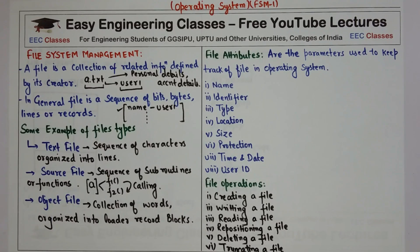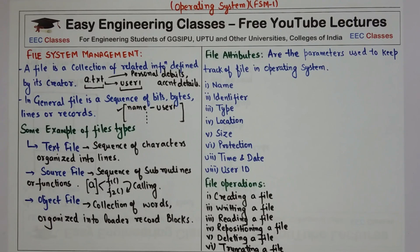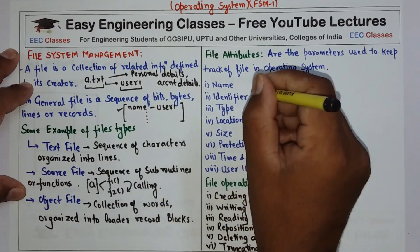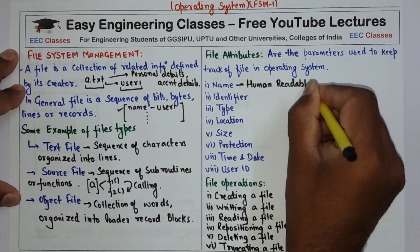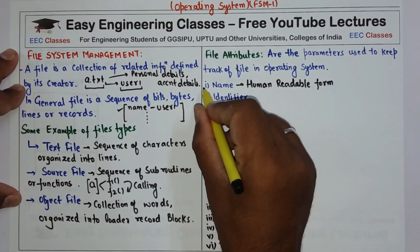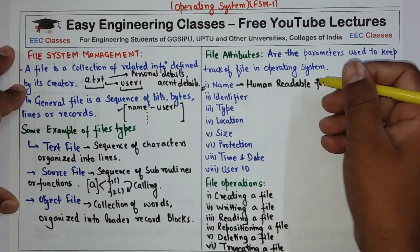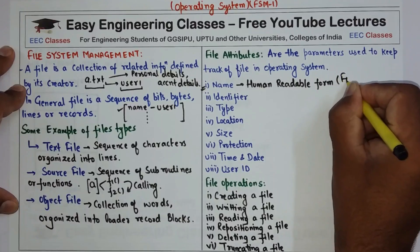Now there are different attributes of any file. Attributes are the parameters which are used to keep track of a file in an operating system — essentially properties of the file used to maintain a log or record of the file in the OS. The first attribute is the name, which is in human-readable form and contains the name of the file — for example, 'a' is the file name.